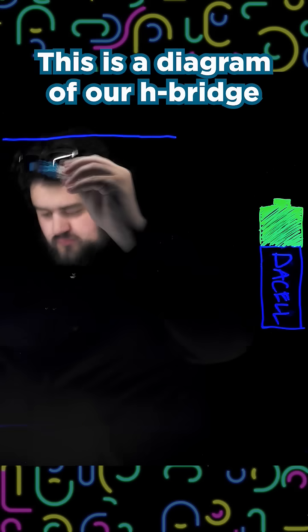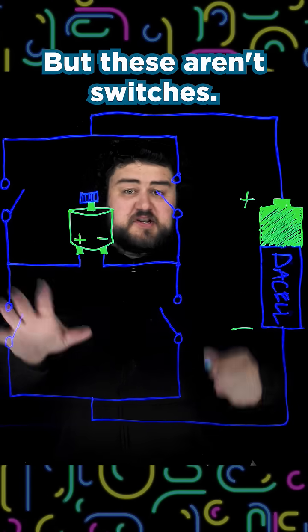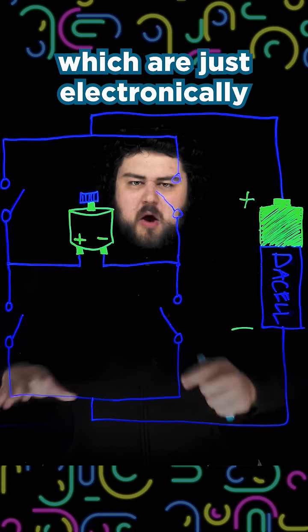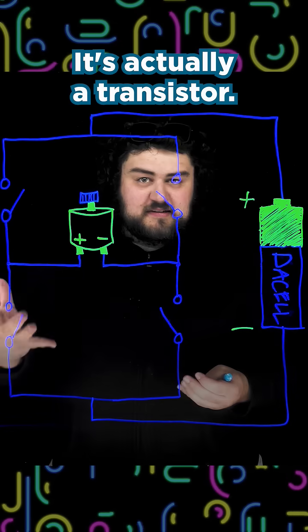This is a diagram of a H-Bridge connected to our power supply with our motor in the middle here. Now the heart of this are these four switches that I've drawn here, but these aren't switches, these are actually transistors, which are just electronically controllable switches.